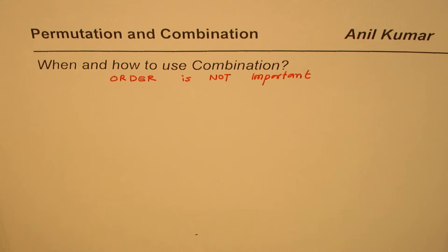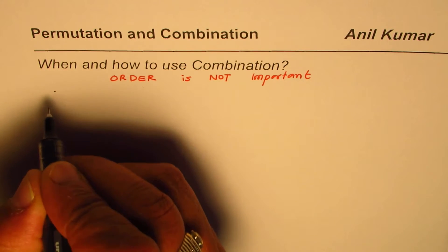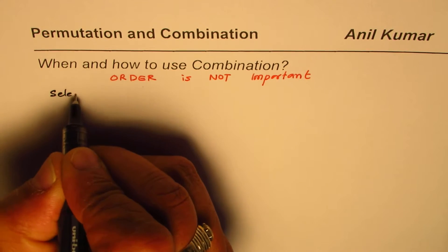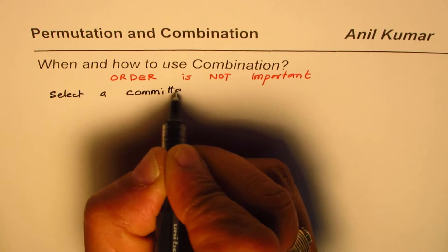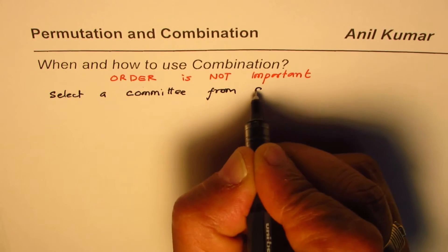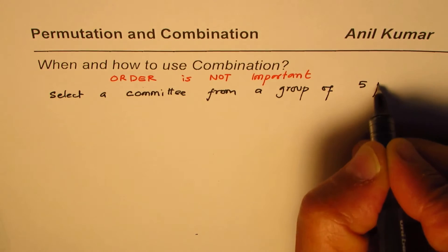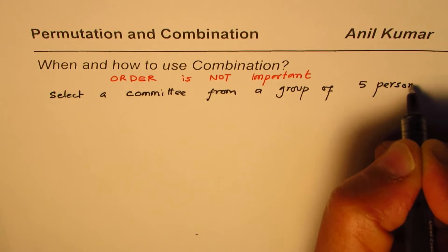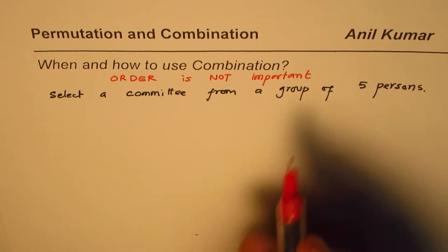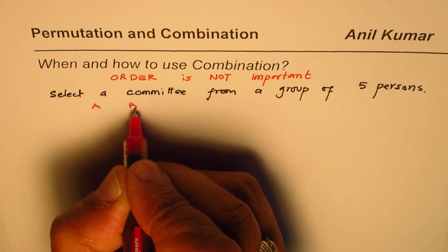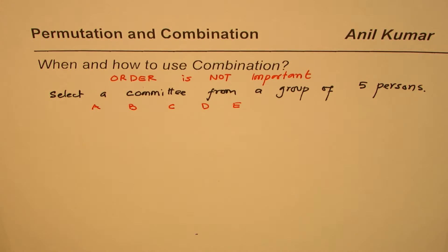Let's take an example and explore. We have to select a committee from a group of five persons. Let's say the persons are A, B, C, D, and E — five distinct individuals — and we need to select a committee from these persons.